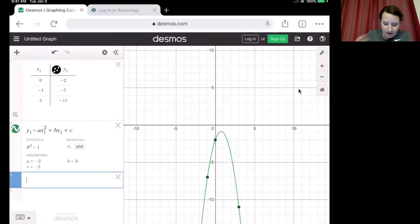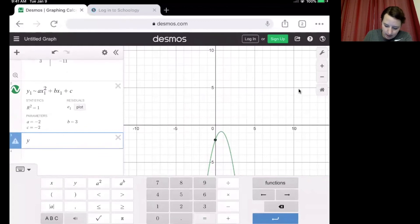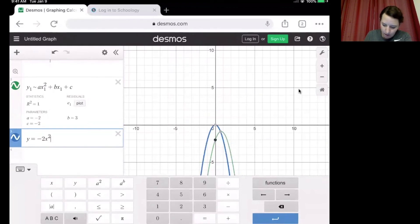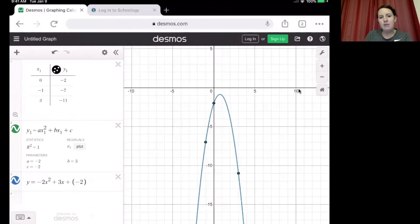So I can now create my standard form of this parabola by saying y equals ax squared. So instead of typing an a, I can now put that a value of -2. So -2x squared plus bx, so plus 3x plus c, so plus -2. And you'll see that that blue parabola lies right on top of that original green parabola.